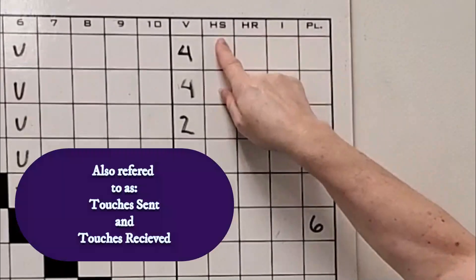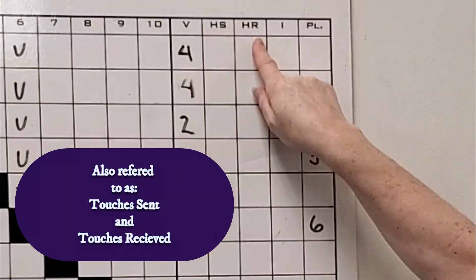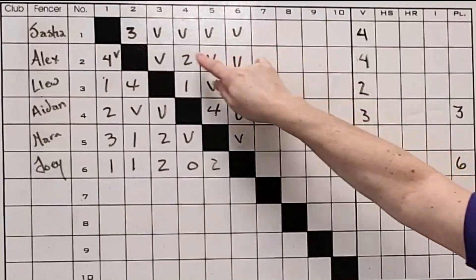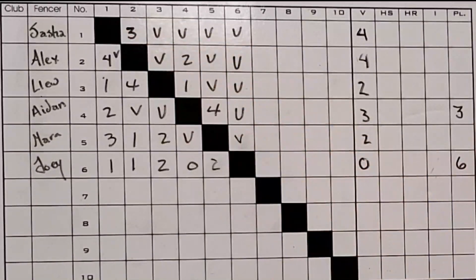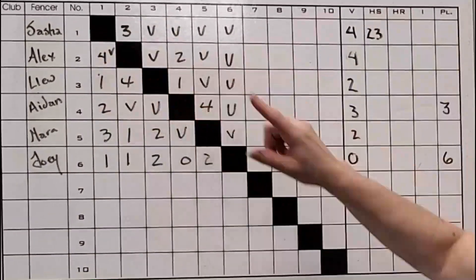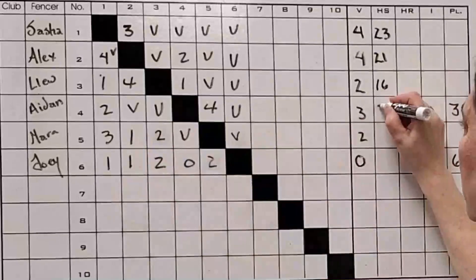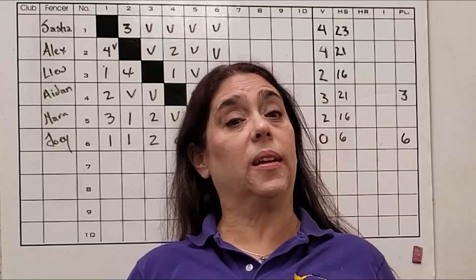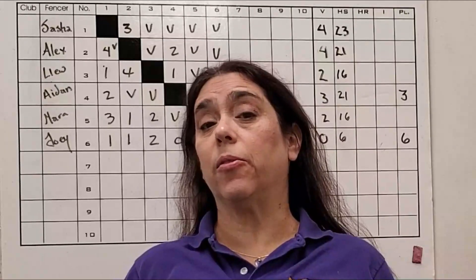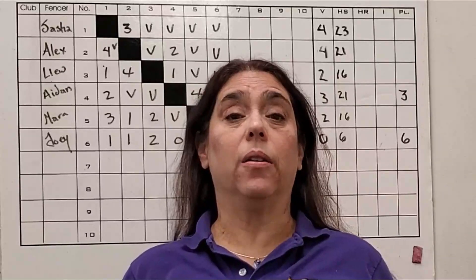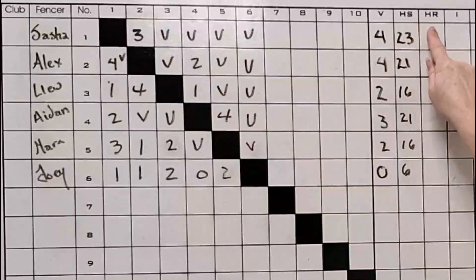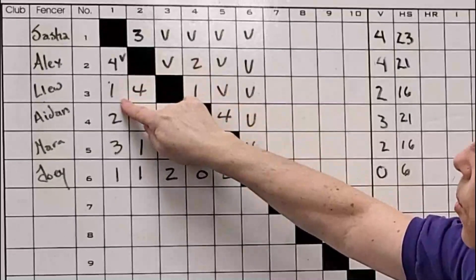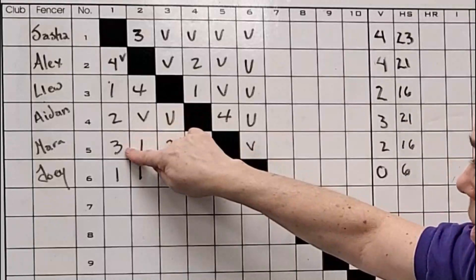Indicator is the difference between hits sent and hits received. Hits sent is the number of times you hit your opponent, so five, ten, fifteen, twenty-three for Sasha. Now that we've counted up hits sent, we need to count up the hits received. Hits received is the number of times your opponent hit your fencer. Instead of hits sent, we're going for hits received, and that's going to be counting down, so we have four, one, five, ten, eleven.